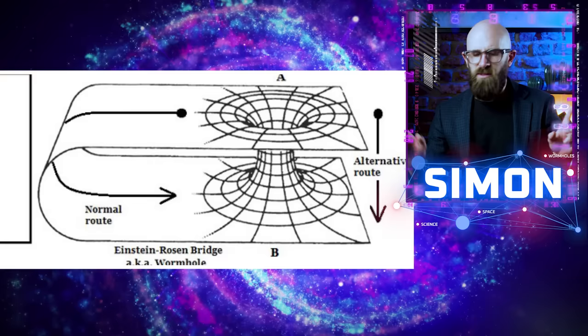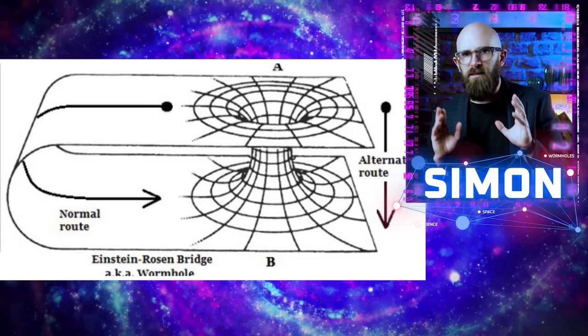All of the maths and physics shows that these wormholes could exist, but they don't actually promise that they would be shortcuts. There's nothing stating that the wormhole couldn't take such a circuitous route between these two points that it would actually be the same distance or even longer than traveling the conventional way.